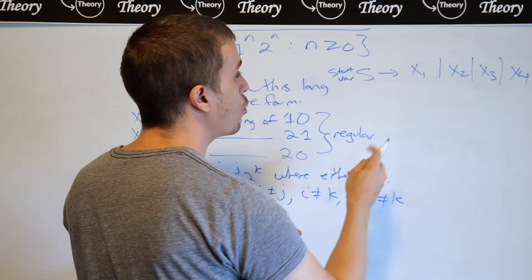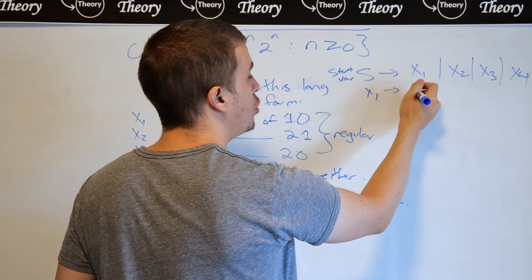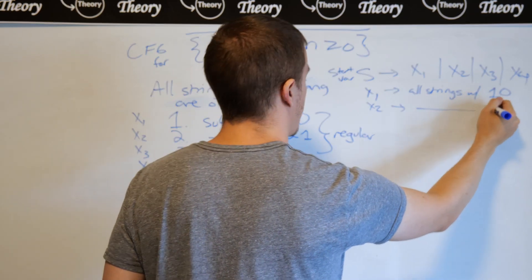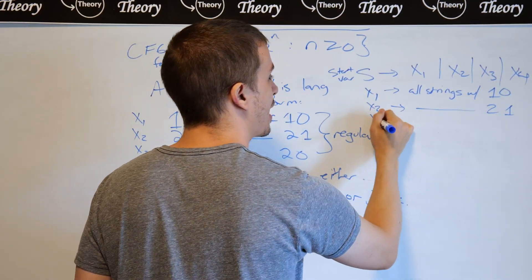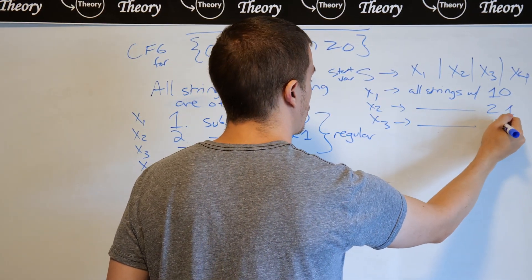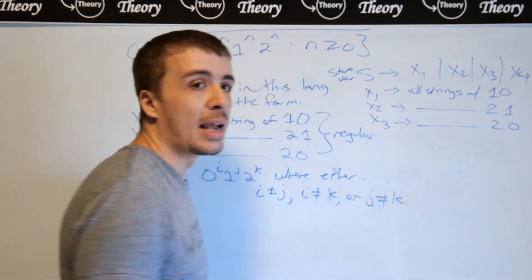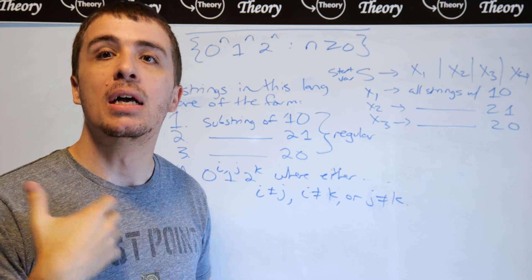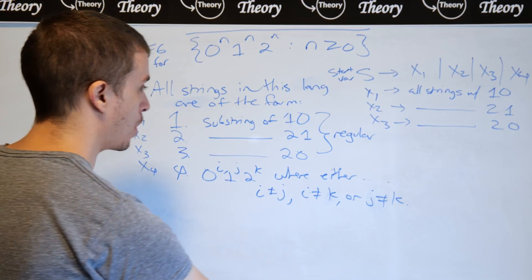So here I'm going to just say that x1 generates all strings with 1, 0, x2 is all strings with 2, 1, and x3 is all strings with 2, 0. And I invite you to actually work out the details of how that works, but I'm going to focus on x4 because that's the interesting part.